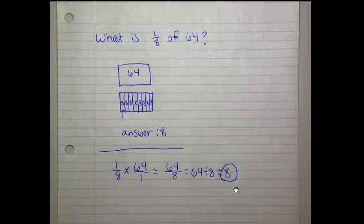Or, shown using the algorithm, 1/8 of 64, where the word of means we're going to multiply. And so to multiply 1/8 times 64, we need to take the whole number 64 and put it over 1 to make it a fraction, an improper fraction, and then multiply. 1 times 64 is 64. 8 times 1 is 8. 64 divided by 8 is 8.